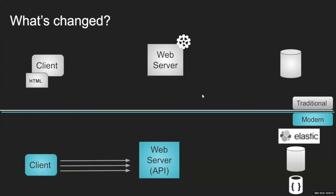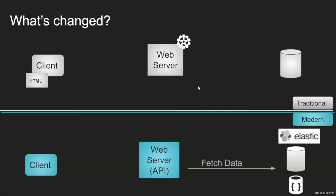Today in APIs it looks very different. Clients know much better what they want — they ask for specific pieces of information, for example fetch the last 10 notifications or get the news from the last day. The web server acts as a proxy between the client and the database, fetching data and returning it in raw JSON format. The rendering process moved from the server to the client.